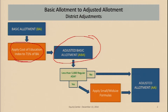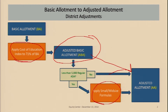For districts that have less than 5,000 regular program ADA, you apply the small and midsize formulas. From there, you get a further adjusted allotment called the adjusted allotment, or AA. For districts already above 5,000 that do not have a state-recognized dis-economy of scale, their adjusted basic allotment and their adjusted allotment are actually the same number.